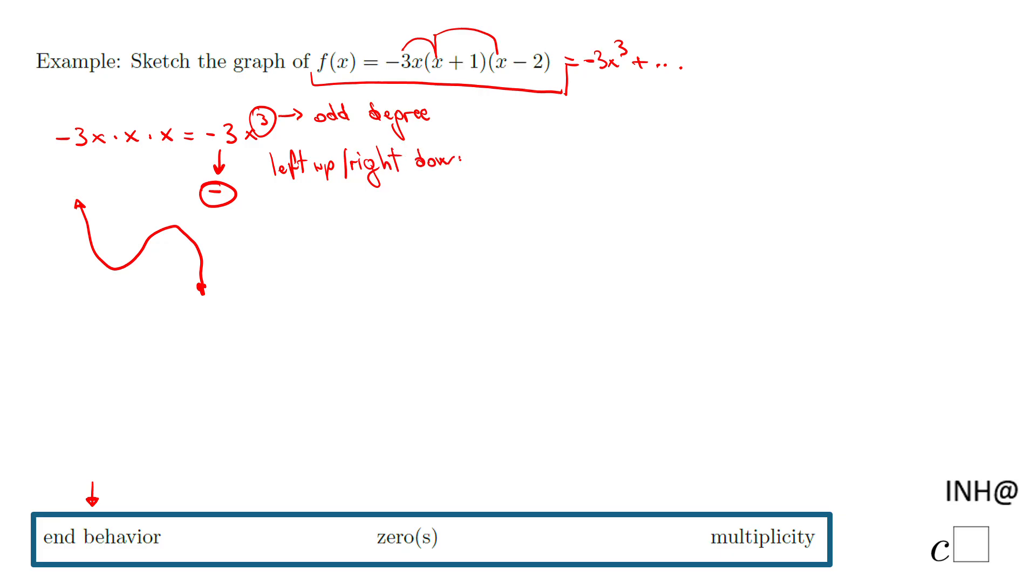So we know now how the function is going to look like. Something like this. This is the end behavior. The zeros: how do we get the zero? We make the function equals to zero.